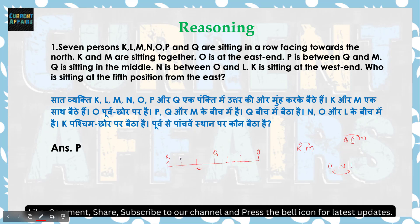K का position fix है, means यहाँ पे M होगा क्योंकि दोनों एक साथ हैं। Q और M के बीच में P है — Q यहाँ है, M यहाँ है, दोनों fix हैं, तो P यहाँ पे आ जाएगा। O यहाँ पे fix है, तो यहाँ पे N होगा क्योंकि N बीच में है L के। तो यह सारा इस तरह arrange होगा। हमें बताना है यहाँ पे कौन आया — तो यह आ गया P। तो हमारा answer P हो जाएगा। चलिए next question करते हैं।